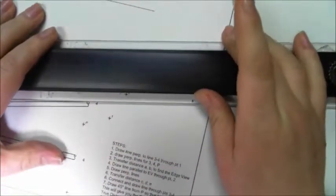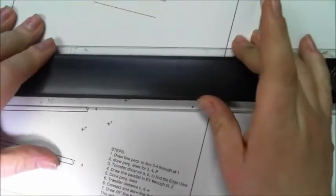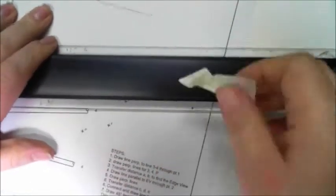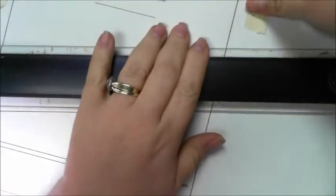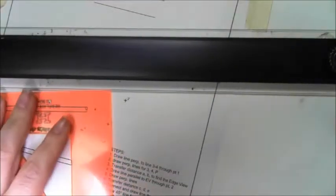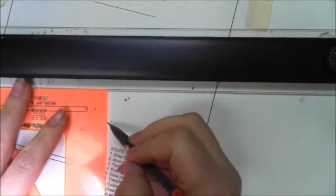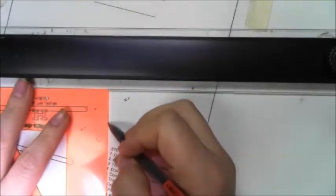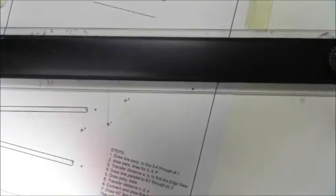I'm going to work reverse down here on this one so you can see hopefully better. I'm lining my parallel straight edge up with that, taping the corners down so it doesn't move around on me. Now I draw a perpendicular.